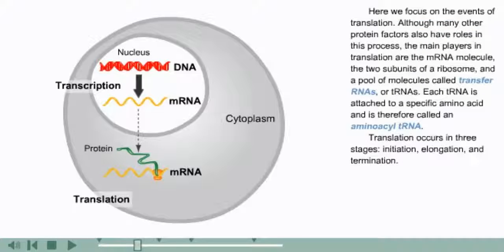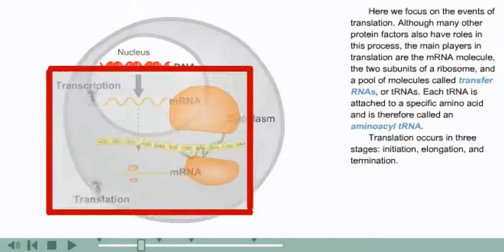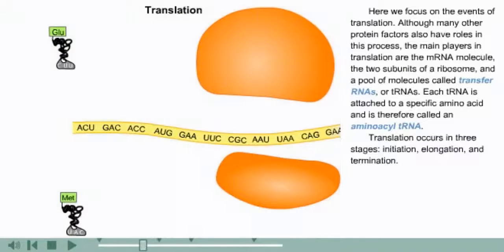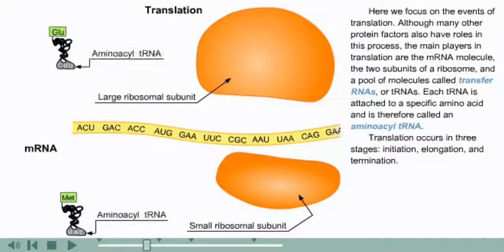Here, we focus on the events of translation. Although many other protein factors also have roles in this process, the main players in translation are the mRNA molecule, the two subunits of a ribosome, and a pool of molecules called transfer RNAs or tRNAs. Each tRNA is attached to a specific amino acid and is therefore called an aminoacyl tRNA.